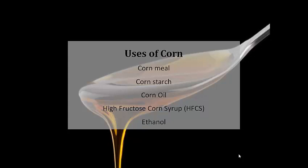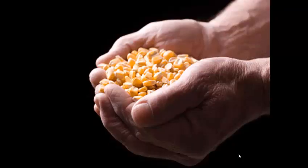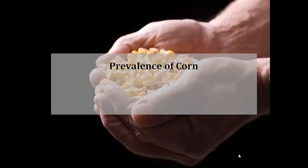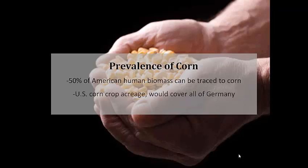Apart from food uses, corn can also be processed into ethanol through fermentation and distillation. To further illustrate the importance of corn products in our daily lives, statistics show that on average about 50% of American human biomass can be traced to corn consumption. U.S. total corn acreage can cover the entire land of Germany, and corn yields have increased 500% since 1931.